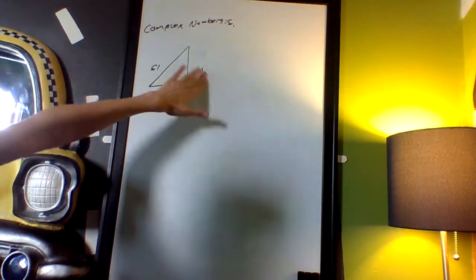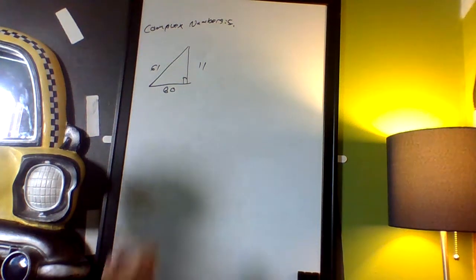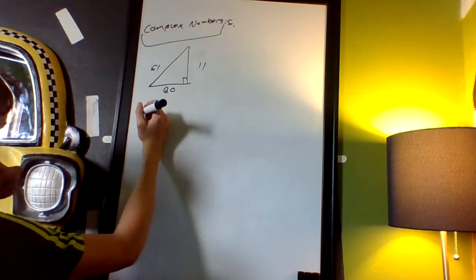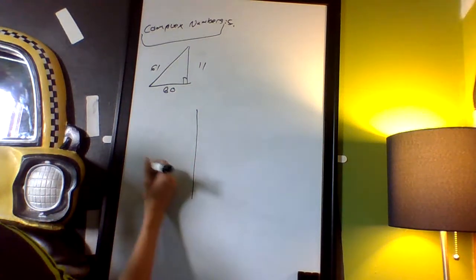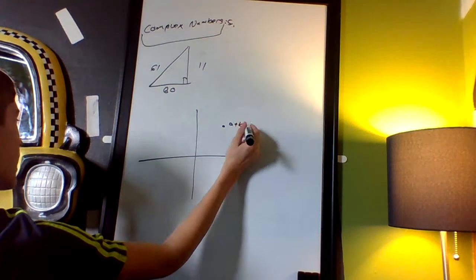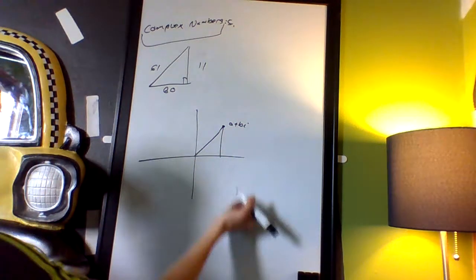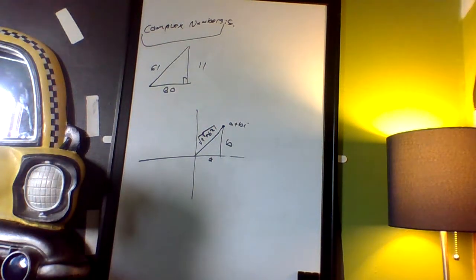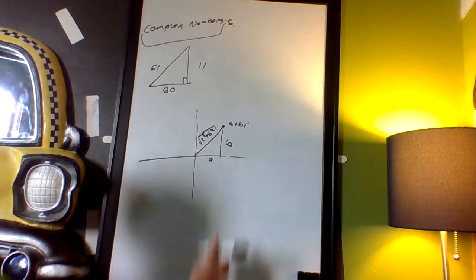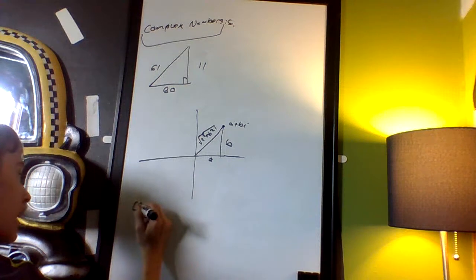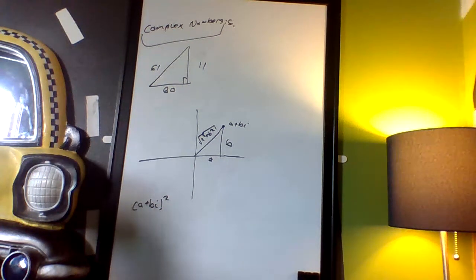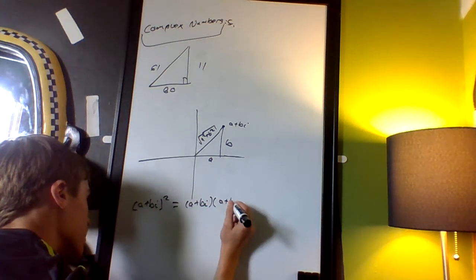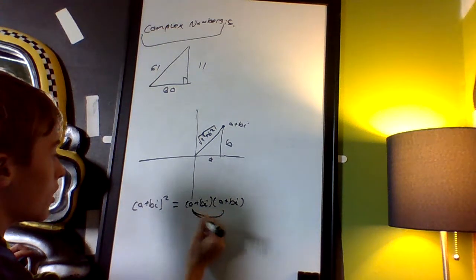The only reason why I know this is because of complex numbers. Here's why. In graphing complex numbers, a plus bi — this side means a, this side means b, and this is the square root of a squared plus b squared. So what if I multiply it by itself and square it? That's going to be a plus bi times a plus bi.